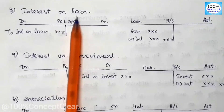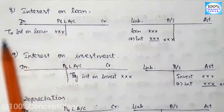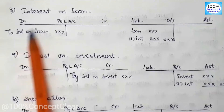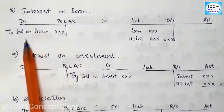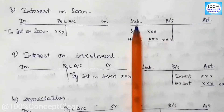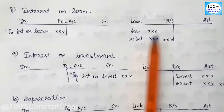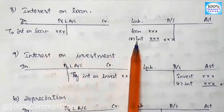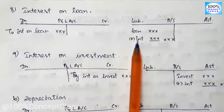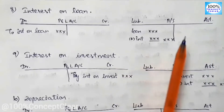Next is interest on loan. A loan is a liability — we have borrowed cash. We have to pay interest on it, so that is our liability and expense. Interest on loan appears in the P&L account as a debit. On the balance sheet, the loan amount is a liability. We add the outstanding interest to the loan amount on the balance sheet.